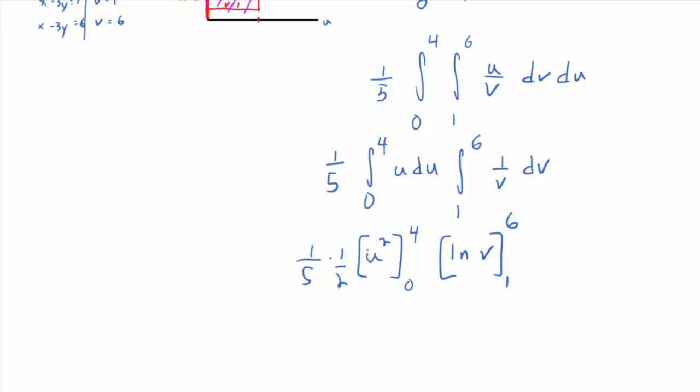All right, so this becomes what when you put in the 4? 16 minus 0. Okay, let's go ahead and divide by 2 right away. 8. So 8 fifths. Okay, 8 fifths. Everybody see that? That's this whole first part. And then natural log of what? 6 minus natural log of 1, but what's the natural log of 1? 0. There it is.